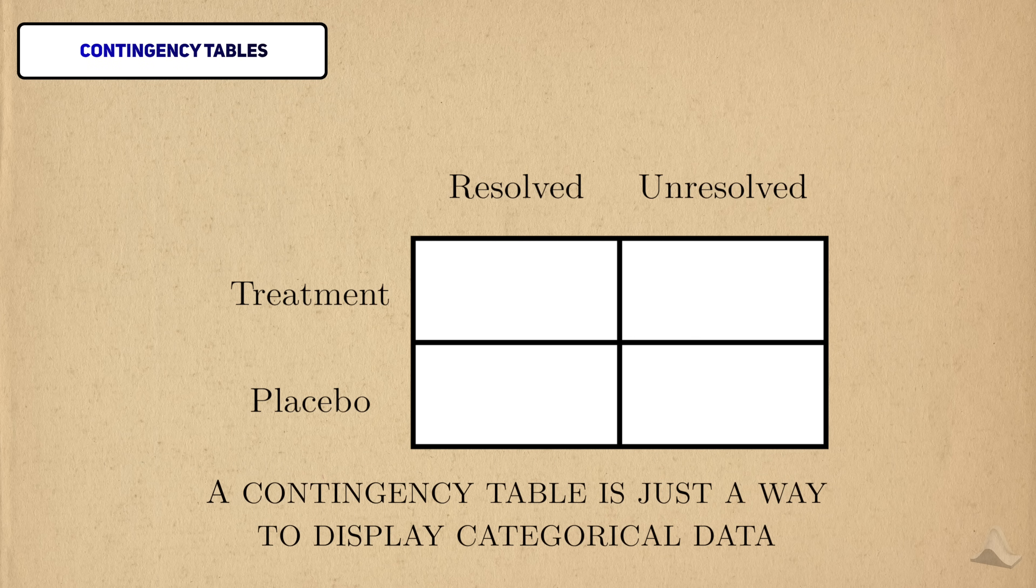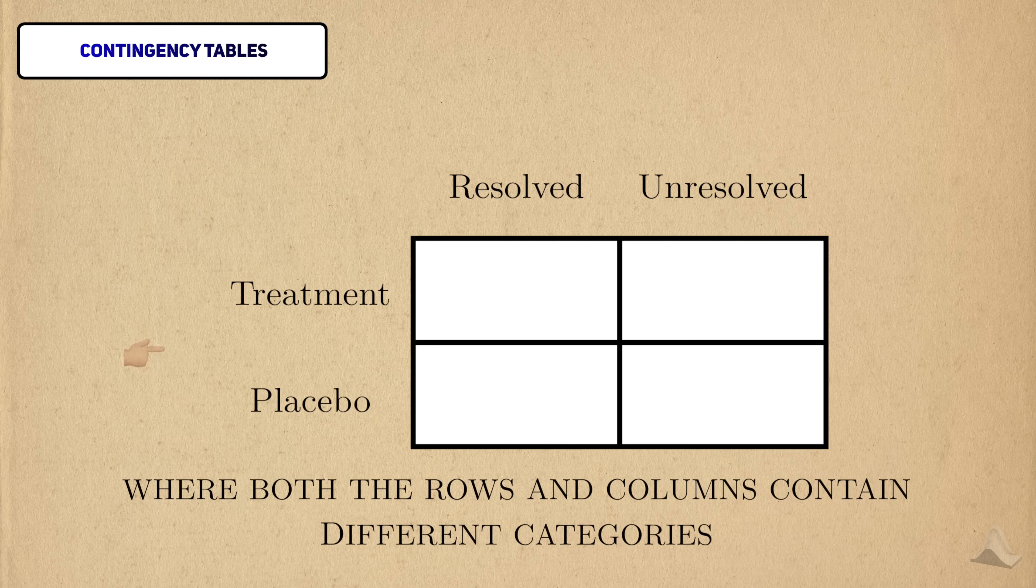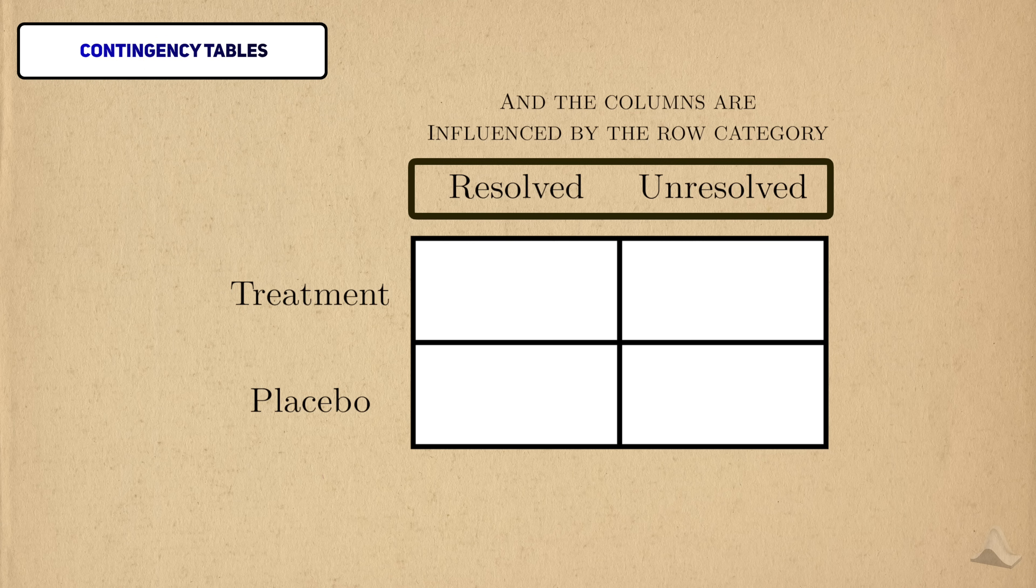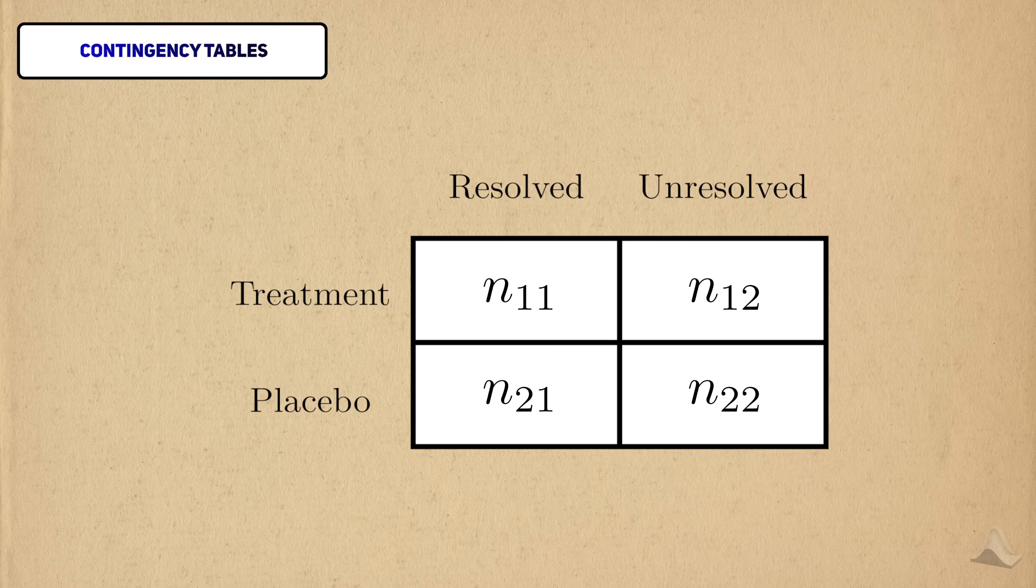A contingency table is just a convenient way to display categorical data. It's a table where both the rows and columns represent different categories of two categorical variables. It's usually customary that the thing we want to control will make up the rows, and the thing we want to see change will be the columns. Each cell of the table will be the number of people who fall into both the row and column categories.